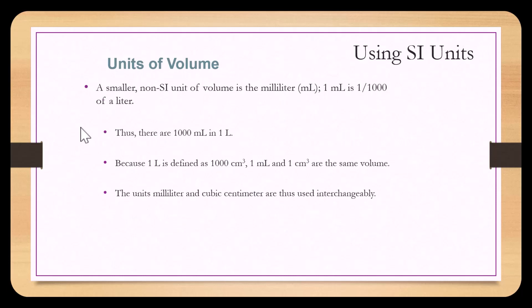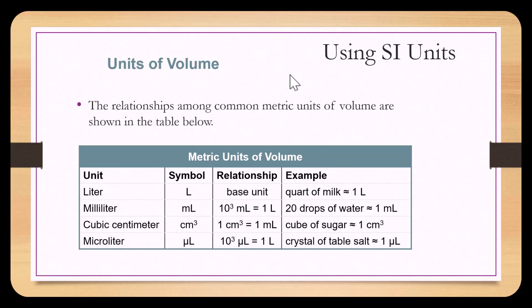A smaller non-SI unit of volume is the milliliter, denoted as mL. One milliliter is one one-thousandth of a liter, so there are 1,000 milliliters in one liter. One milliliter and one cubic centimeter are the same volume, so these units are used interchangeably. One liter is about the same as a quart of milk. A milliliter is about twenty drops of water. A cubic centimeter is about the size of a cube of sugar, and a microliter is about the size of a crystal of salt.